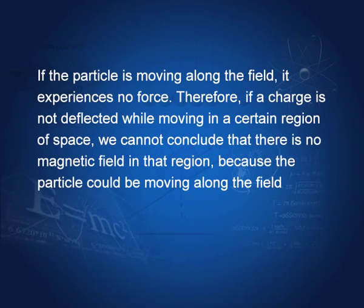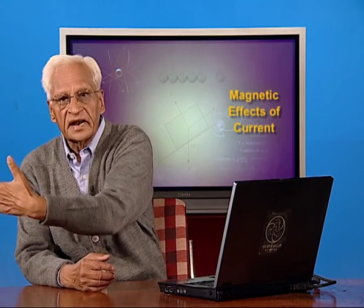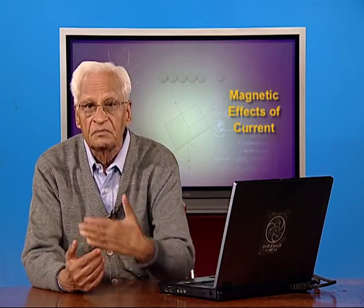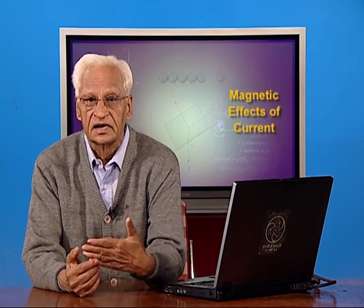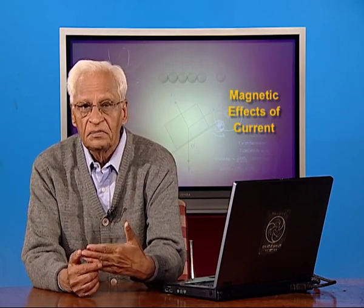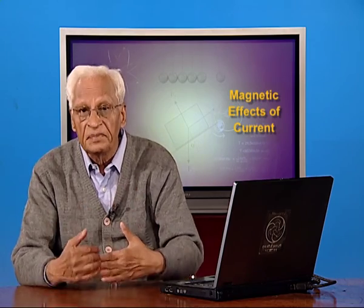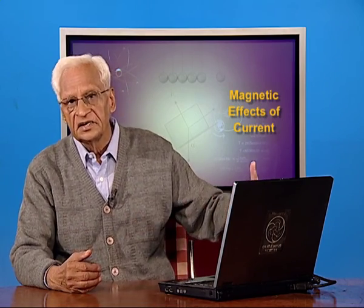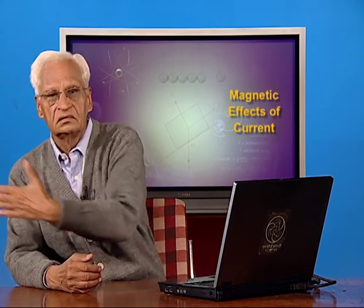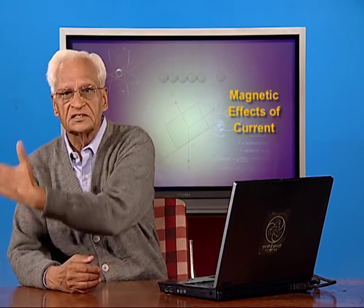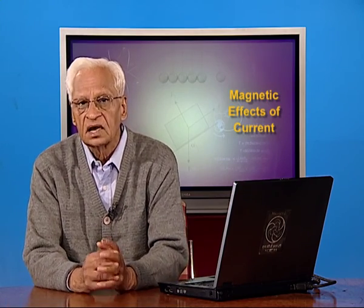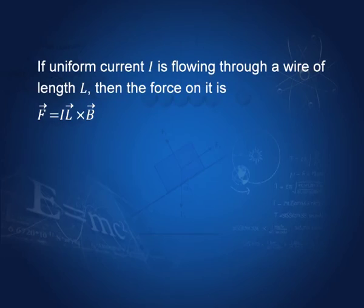That means if a particle goes in a certain direction undeflected, it does not mean that there is no magnetic field. The magnetic field may be there, but it is parallel to the direction of motion of the particle and therefore does not affect it.